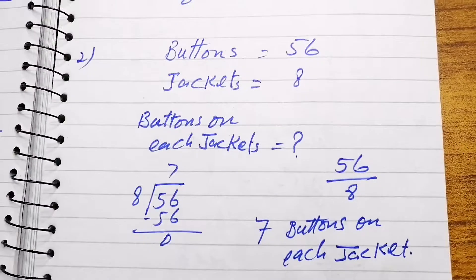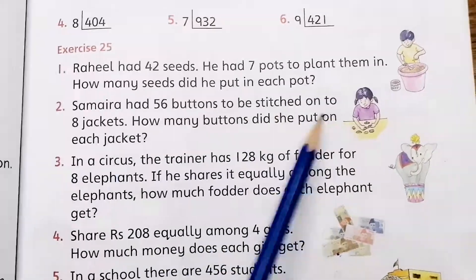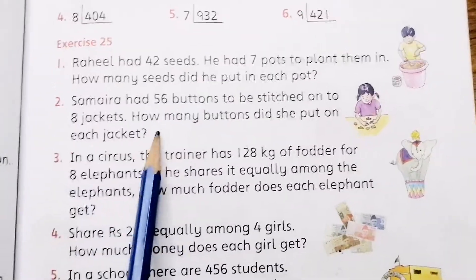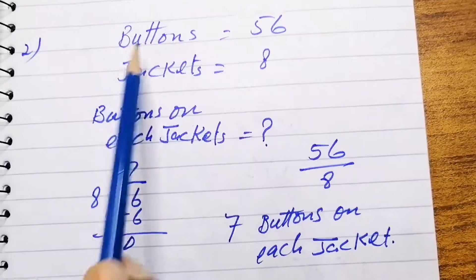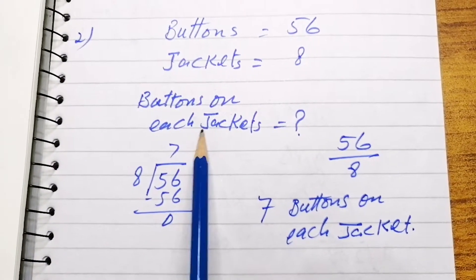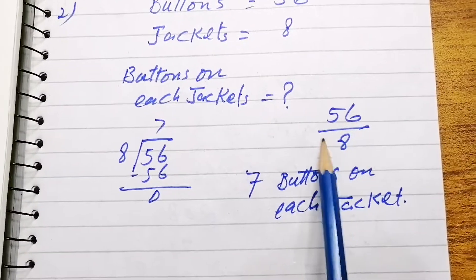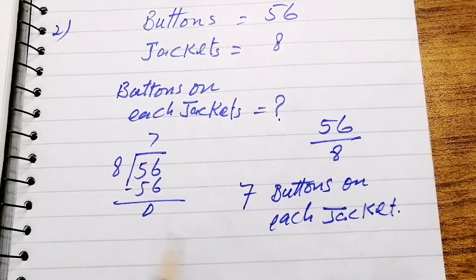Second question: Sumaira had 56 buttons to be stitched on to 8 jackets. How many buttons did she put on each jacket? Buttons are 56, jackets are 8. We will divide 56 by 8. 8 7s are 56, so 7 buttons on each jacket.